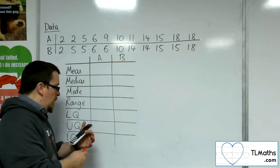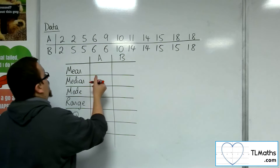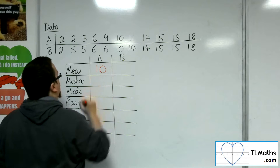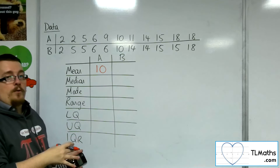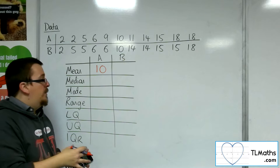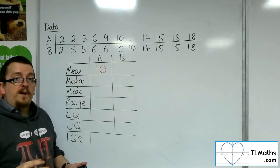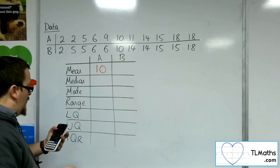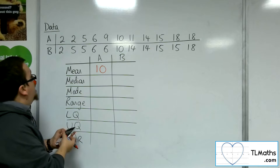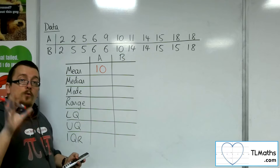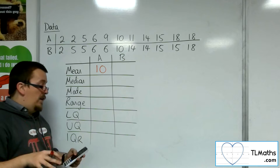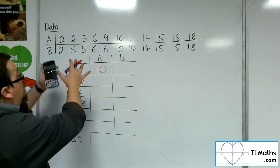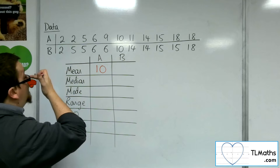So the mean here is 10. It also calculates all of these other bits of information as well. If you scroll down, just so that we're clear on how we can find these things, just by looking at the set of data.